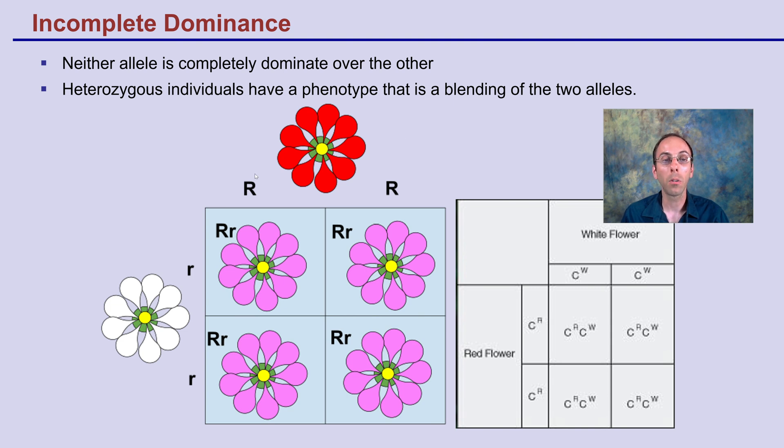One allele isn't dominant over the other — it's incomplete. You get this blending, causing the heterozygotes to have their own distinct look or phenotype.